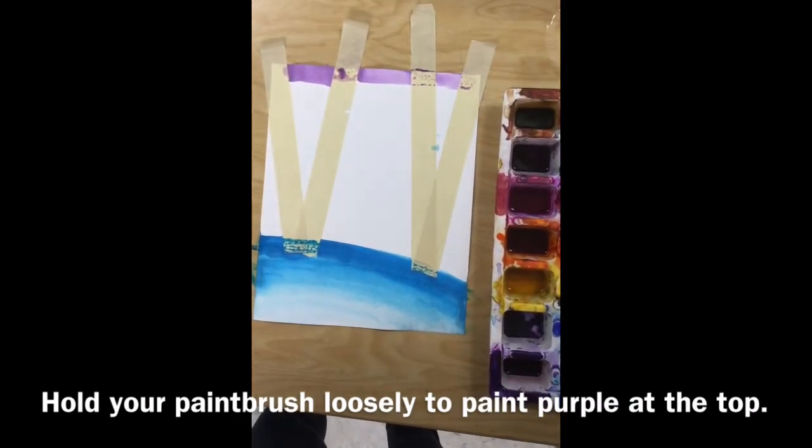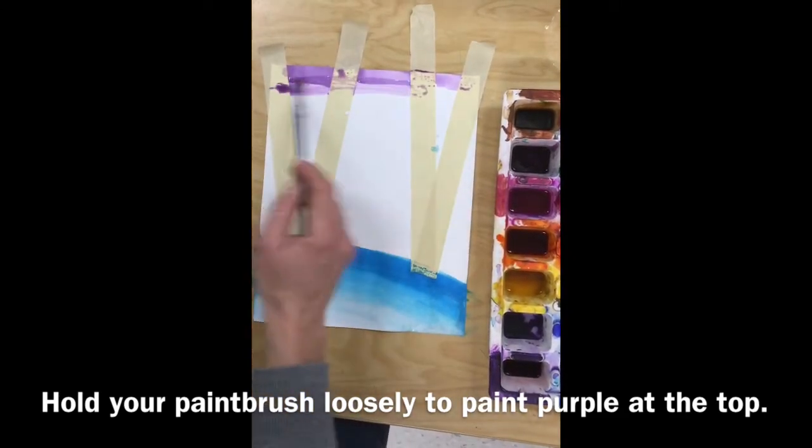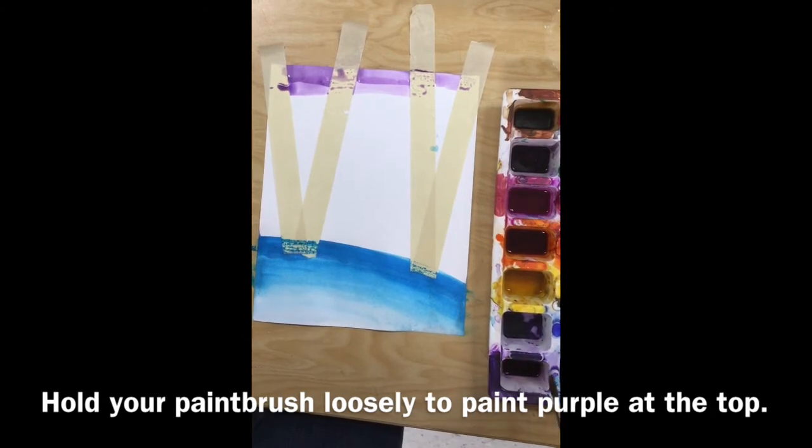Then hold your paintbrush loosely to paint purple at the top of your paper. You'll cross over all of the trees that you have taped down.